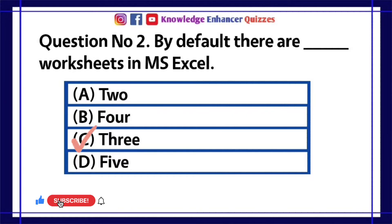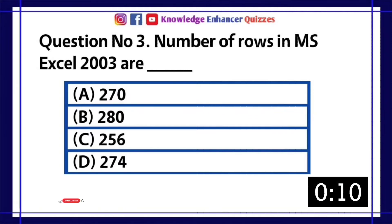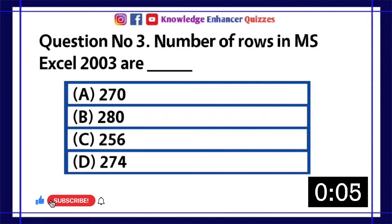Option C is the right answer. Question number 3: Number of rows in MS Excel 2003 are — A. 270, B. 280, C. 256, D. 274.